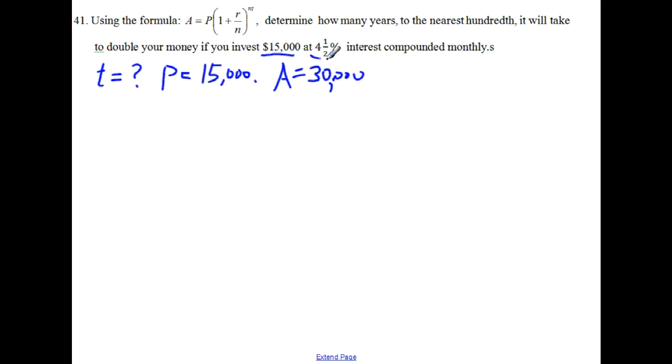Now what is this 4.5%? That is the interest rate, so that is for R. R is 4.5% and whenever you use a percent in a formula, you have to convert it to a decimal number, so this is 0.045.